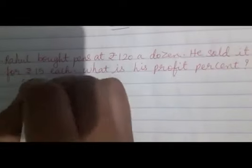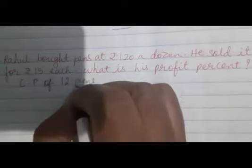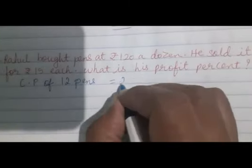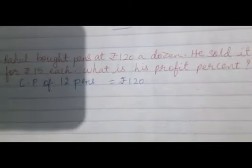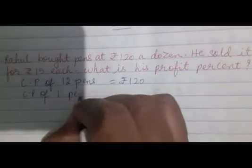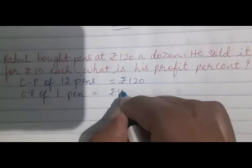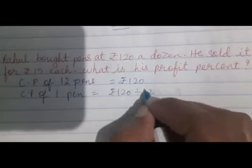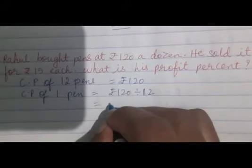Cost price of 12 pens is Rs.120. What is the cost price of one pen? Rs.120 divided by 12, which is Rs.10.